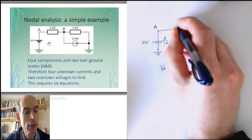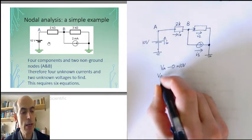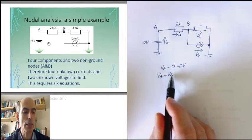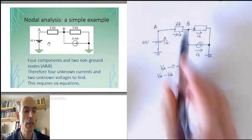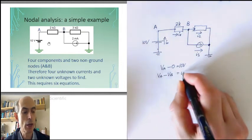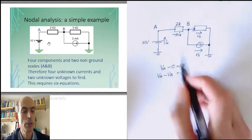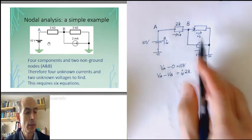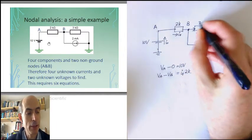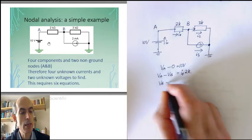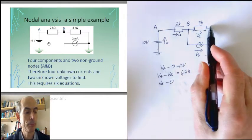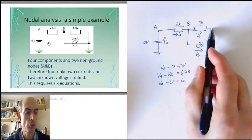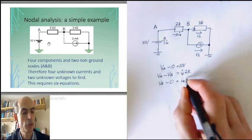For this 2k resistor here, I would apply Ohm's law and say that VA minus VB, note the order, A minus B, since the current is shown in the direction from A to B, is equal to I1, the current from A to B, times the value of the resistor, 2k. I could apply Ohm's law to this 3k resistor in a similar way, and end up with VB minus 0 volt equals I2, the current from B to ground, times the resistance 3k.